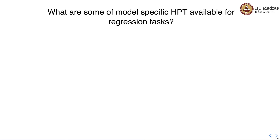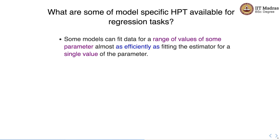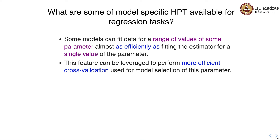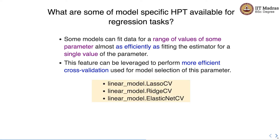Apart from GridSearchCV and RandomizedSearchCV, there are some model-specific hyperparameter tuning methods available for regression tasks. Some models can fit data for a range of values of a parameter almost as efficiently as fitting for a single value, which can be leveraged for more efficient cross-validation. Three such models are LassoCV, RidgeCV, and ElasticNetCV, which help find the best value of the regularization parameter used in Lasso, Ridge, and Elastic Net.